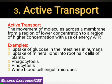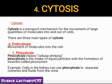Active transport کی examples ہیں: human body کے اندر glucose absorption in small intestine، root hair cells کا mineral absorption from the soil، phagocytosis — means cell eating process، اور pinocytosis — means cell drinking process، نیز white blood cells کا germ کو engulf کرنا۔ یہ سب ATP energy استعمال کرتے ہیں۔